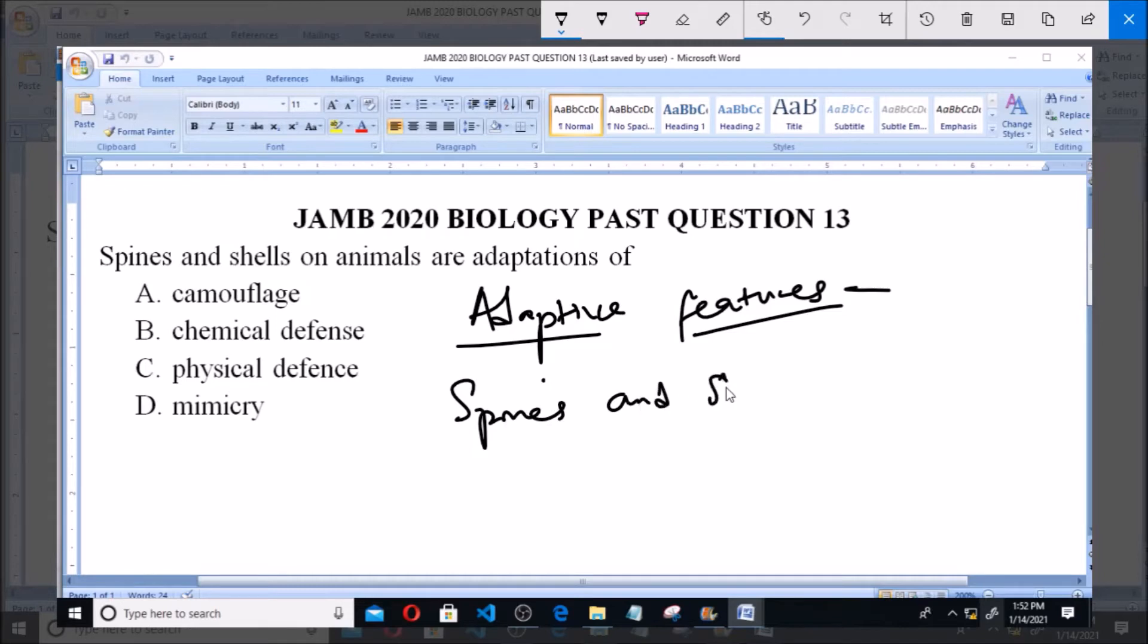This spine and shell helps to give physical protection to these animals. It provides the animals with physical protection. A typical example is the snail. Snail possesses a shell that helps to keep the body of the snail intact against harm and against pressure.